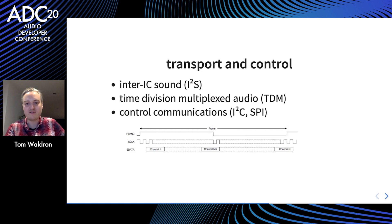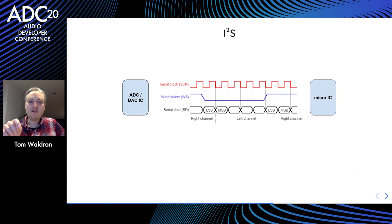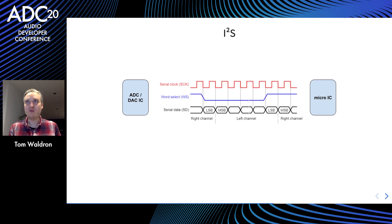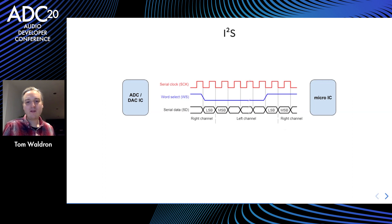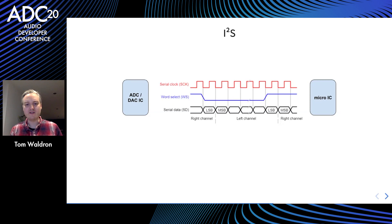TDM isn't standardized, so implementations may look different. I2S is probably more prevalent — it's the main way ICs communicate audio between each other. You have three signals, and sometimes you may see I2S with a fourth signal: a master clock used for synchronization, fed to different parts of the system so they stay in sync. When the serial clock transitions from low to high, the serial data signal is sampled. The word select signal says which channel you're reading at the time — either left or right. I2S is only stereo, though there are alternative versions with more channels. Otherwise you would probably use TDM, because you can have as many channels as you like.